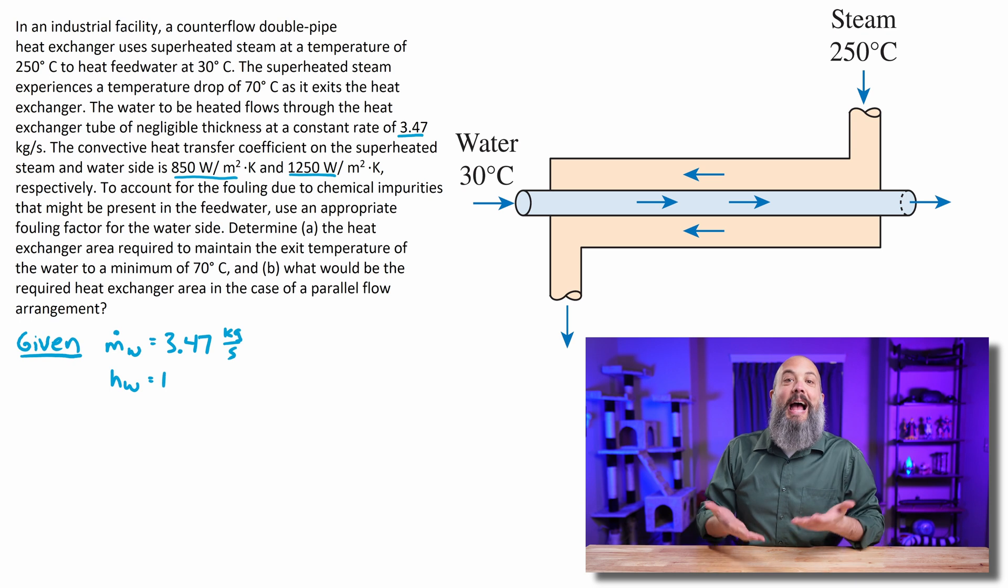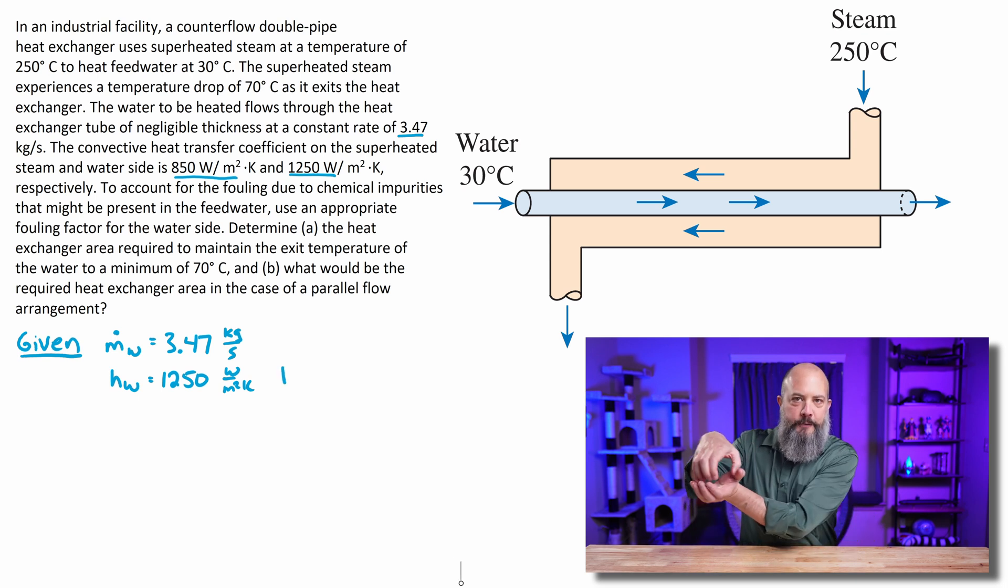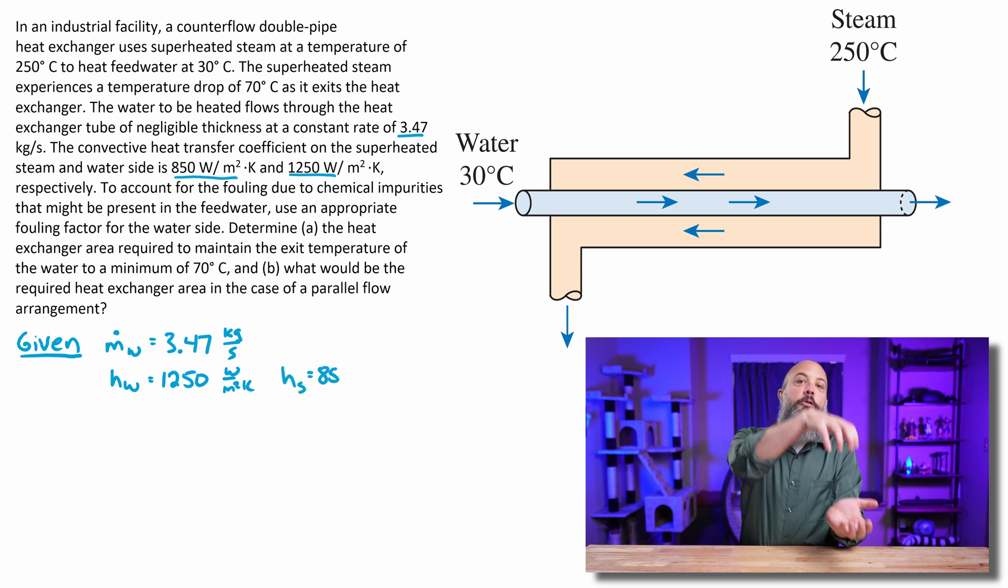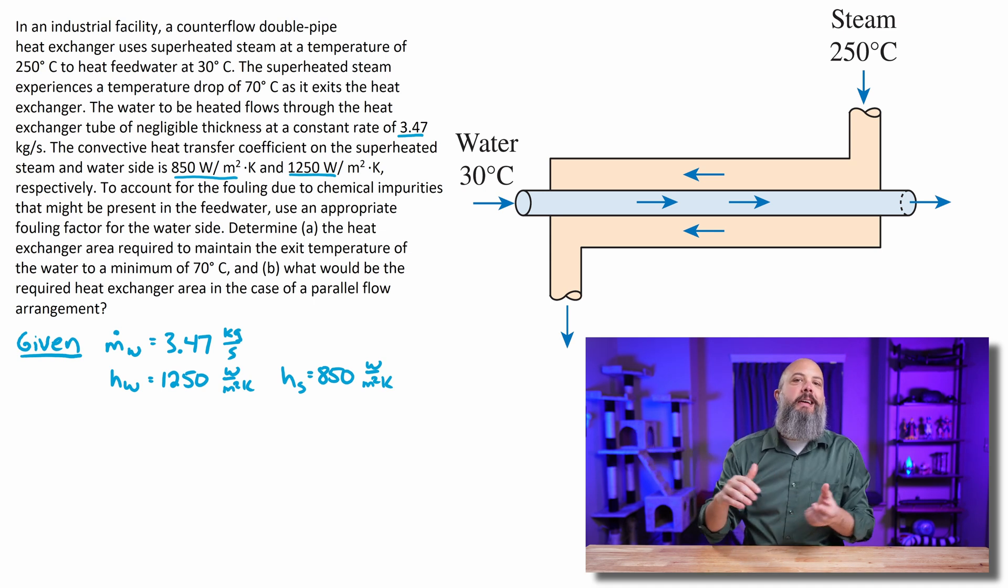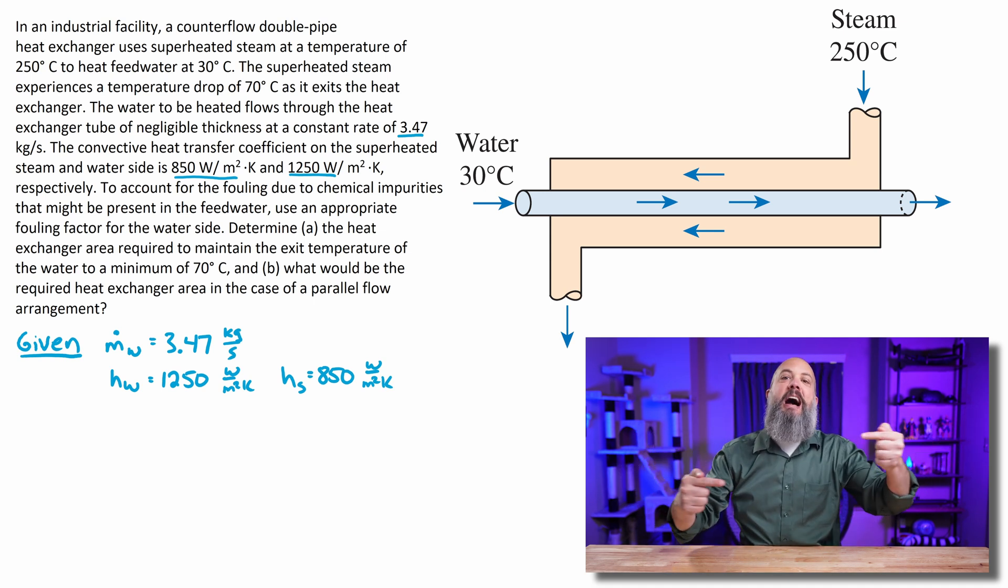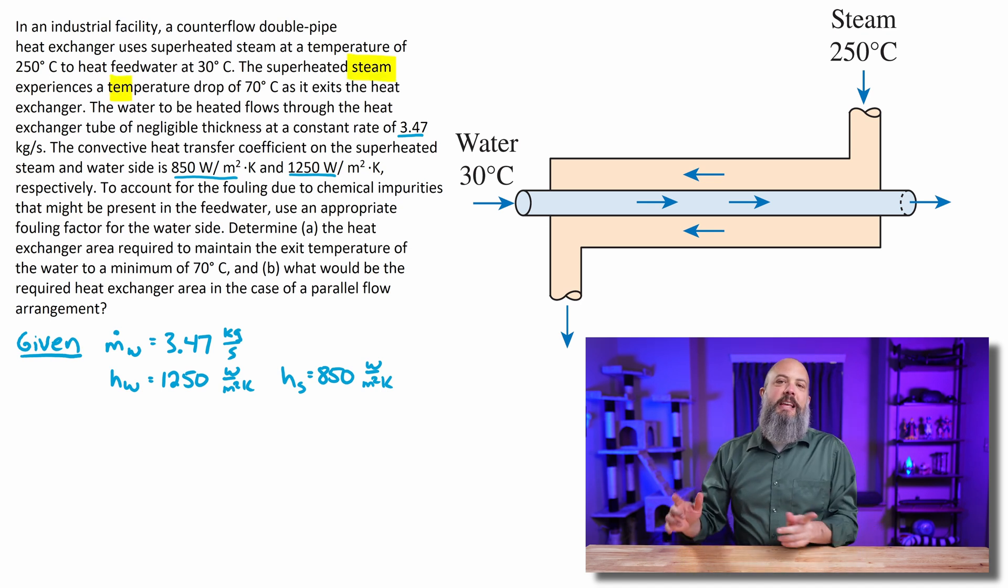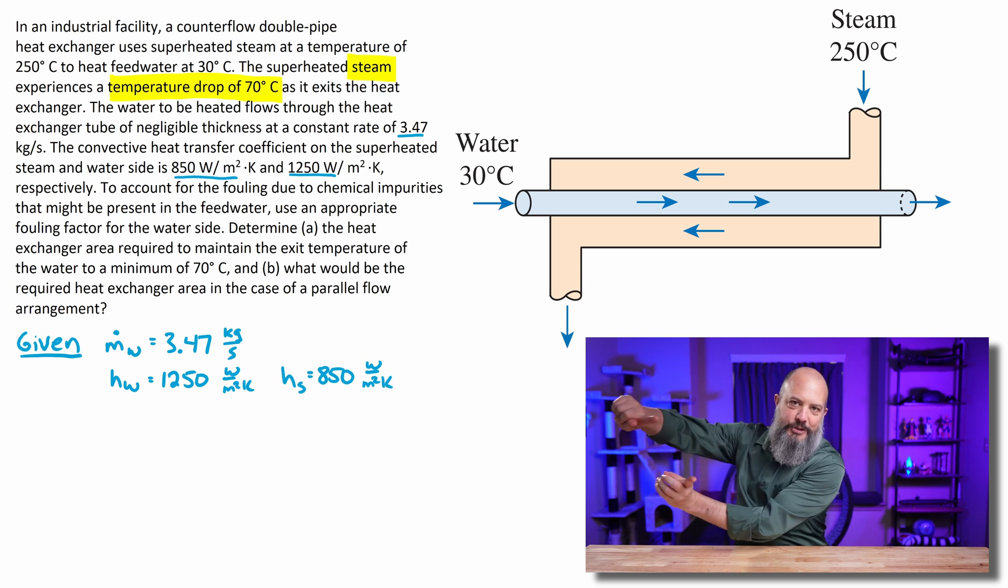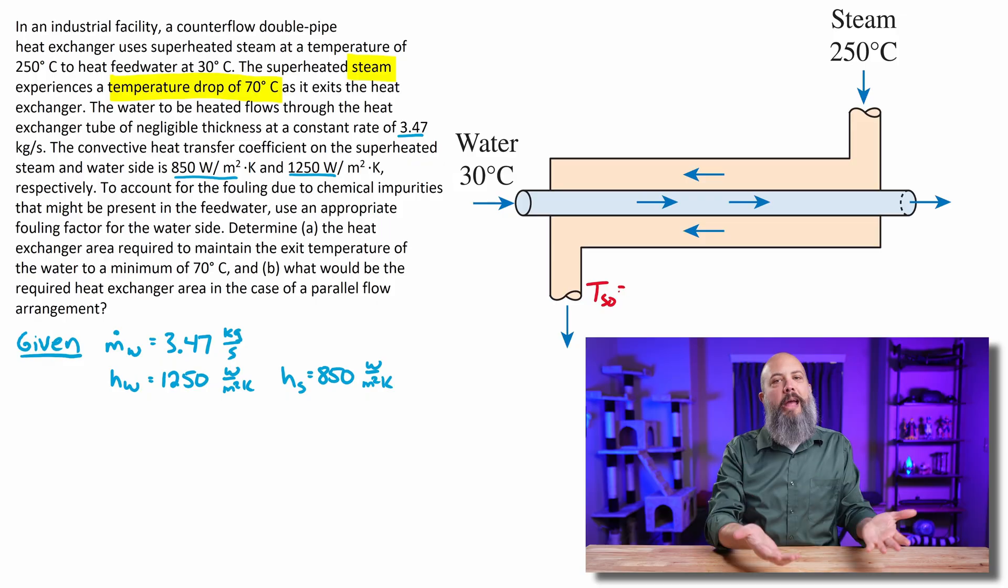The figure on the screen is for a counter flow double pipe heat exchanger. This means that we've got our cold fluid flowing through a pipe, and then outside that pipe is a second pipe where we have steam basically flowing in a ring around the water. And the water and the steam are flowing in opposite directions, that is counter flow. Now if this were opposite, if the steam and water were both entering the same side and going in the same direction, that would be parallel flow.